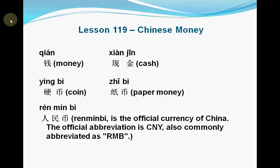How do you speak money in Chinese? 钱 (qián) means money. 现金 (xiànjīn) means cash. 纸币 (zhǐbì) means paper money. 人民币 (rénmínbì) is the name of Chinese currency.